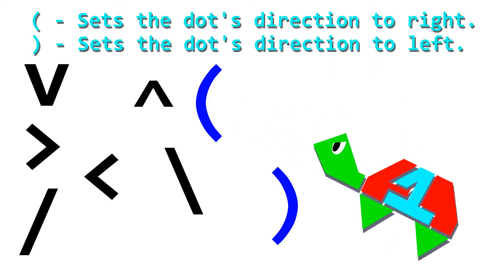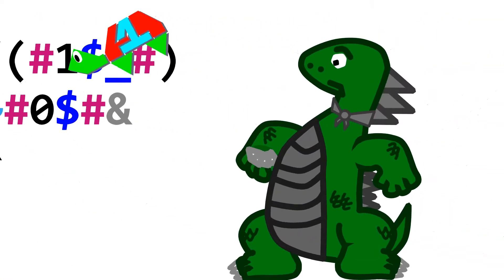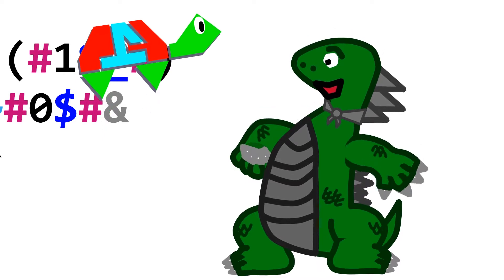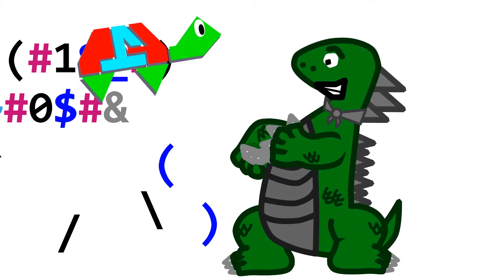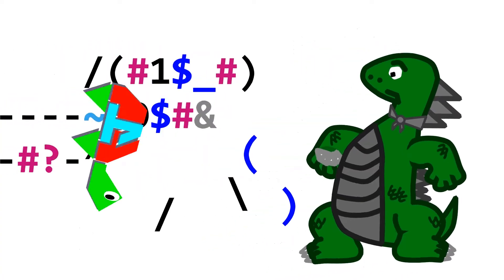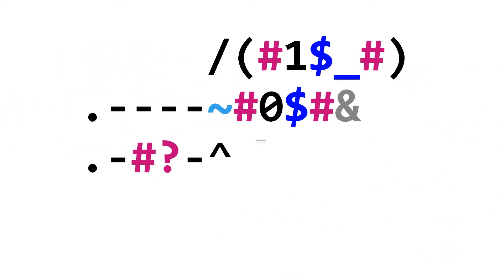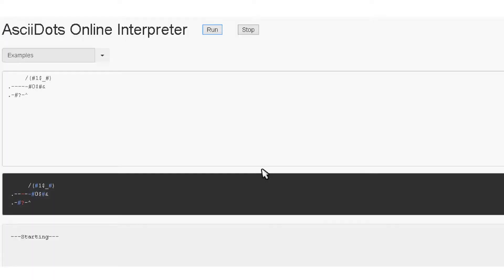There only needs to be four. Maybe some people would prefer to use these ones because they look nicer! Anyway, here's the code in action. I used the online interpreter because it highlights where the dots are in red.